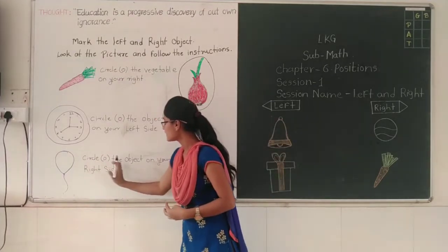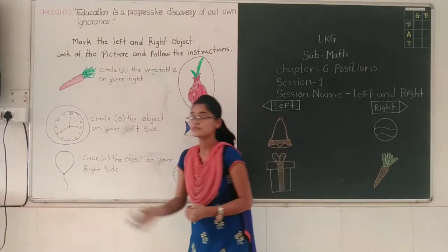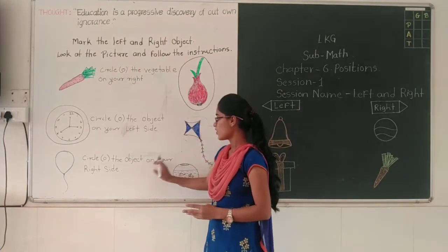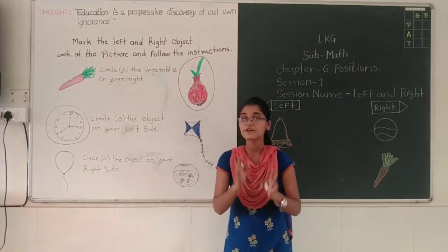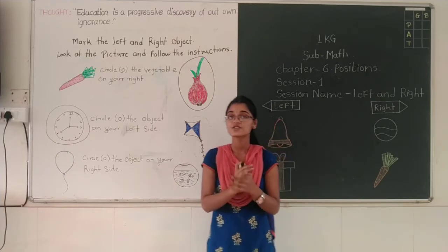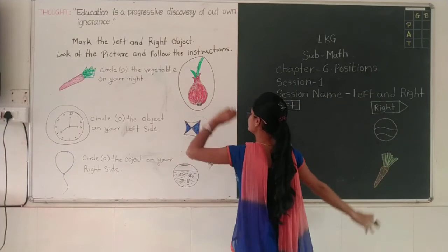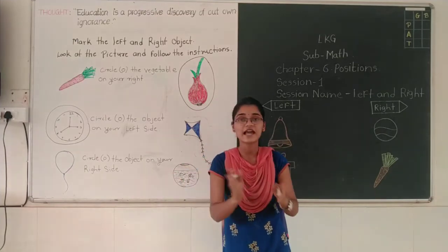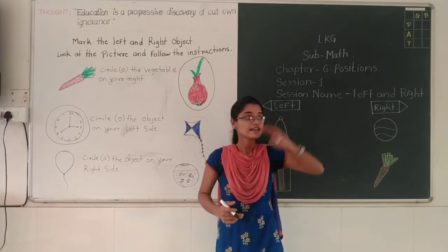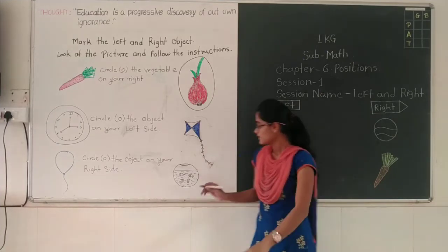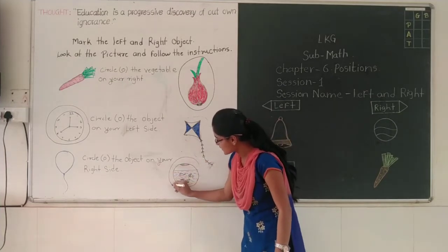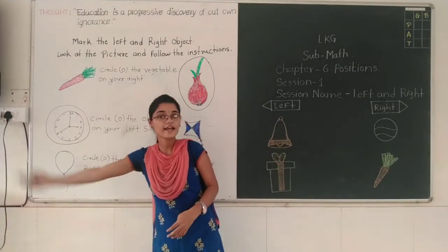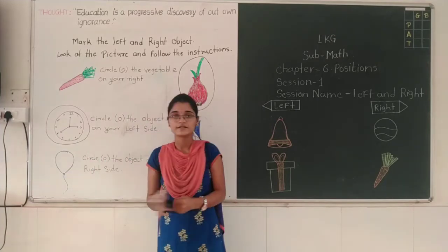Now next: circle the object on your right side. Two objects are here. Tell me which is your right side? This is your right side, this is your left side. So which object is on the right side? This fish pot is on the right side, so you have to circle it. And this burger is on your left side, so you don't have to circle it.